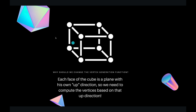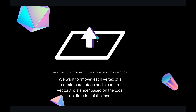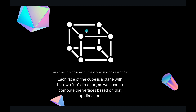Each plane of the cube has its own local up direction. This is actually my left, this is actually my right, this is actually my up, this is actually my down, and so on and so forth. So we want to move each vertex by a certain percentage and a certain Vector3 distance based on the local up direction of the face.